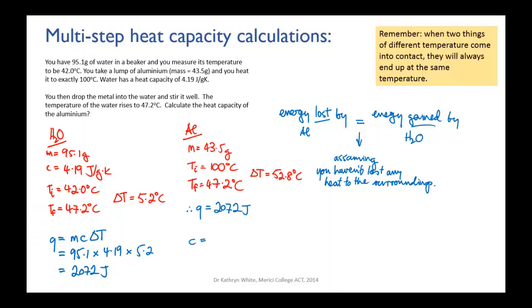So the heat capacity for aluminum is Q, the heat that was lost, divided by the mass which is 43.5 grams, times the temperature change which is 52.8. And when you plug that in you will get 0.91 joules per gram.